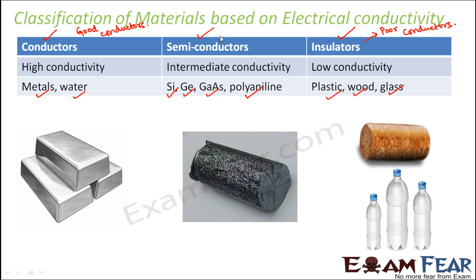The functioning of semiconductors is complex and will be covered in higher classes. Today we will focus mostly on conductors and insulators — particularly conductors — because we want to see how electric current produces chemical changes in a solution through which it passes. For current to pass through a solution, that solution has to be a good conductor.